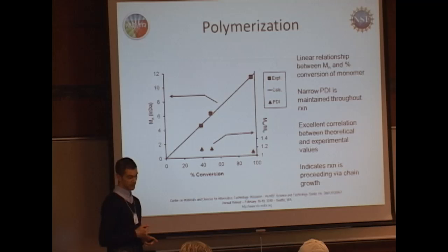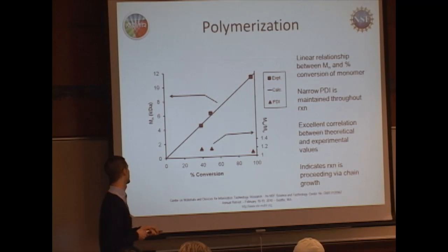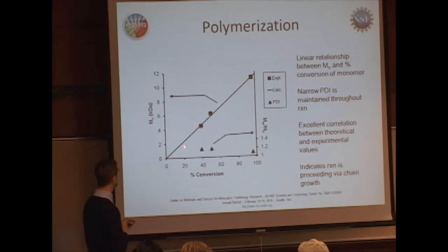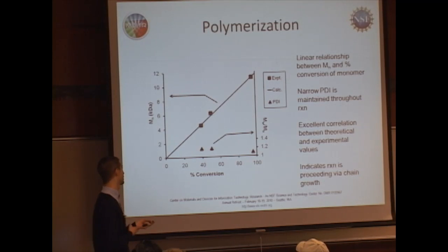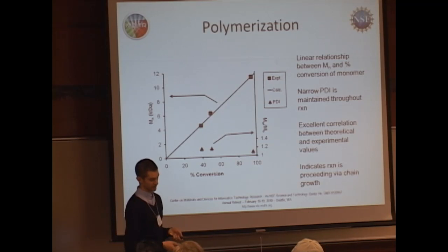To confirm the reaction goes via a chain growth mechanism, we took aliquots of the reaction as it proceeded and quenched and analyzed them. The important thing is that the molecular weight determined by GPC versus the percent conversion of monomer is linear. The polydispersity stays low throughout. These two things in combination confirm that yes, the reaction is going through chain growth.